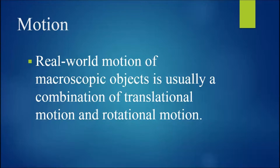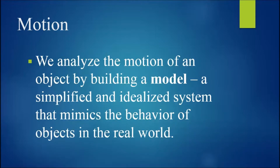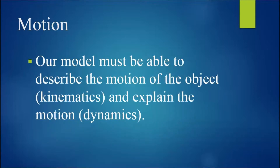Real world motion of macroscopic objects is usually a combination of translational motion and rotational motion. We analyze the motion of an object by building a model, which is a simplified and idealized system that mimics the behavior of objects in the real world. Our model must be able to describe the motion of the object, which is the domain of kinematics, and also explain the motion, which is the domain of dynamics.